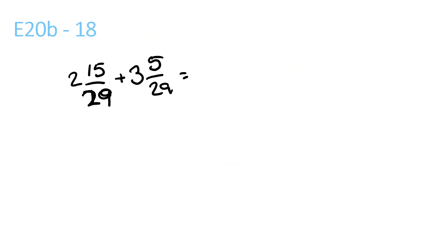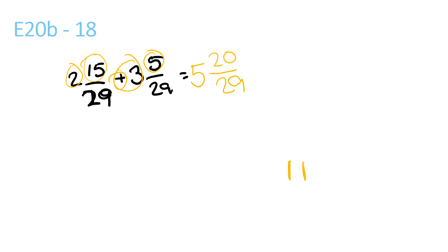Last question: 2 plus 3 is 5. 15 plus 5 is 20 over 29. I hope you enjoyed and understood something from this Kraken Kumon video. If you have any video requests, just comment and I will check as soon as I can, maybe within the next 3 days. Have a good time.